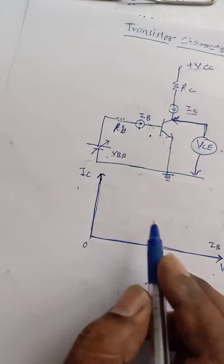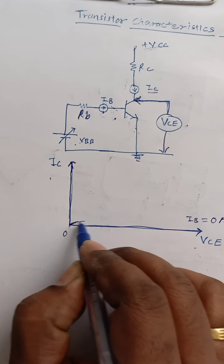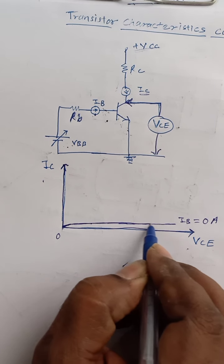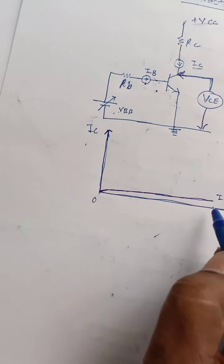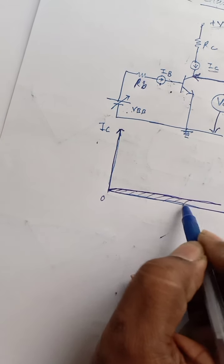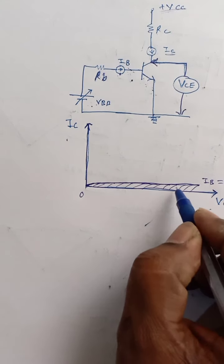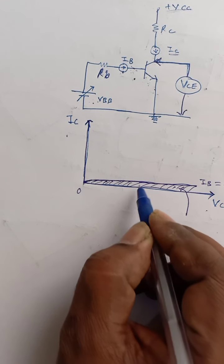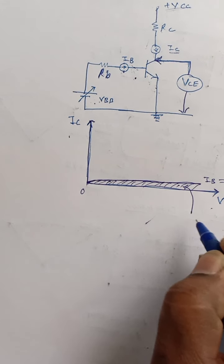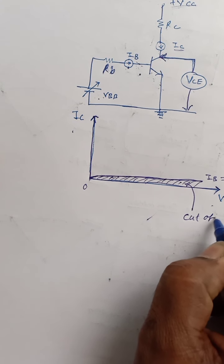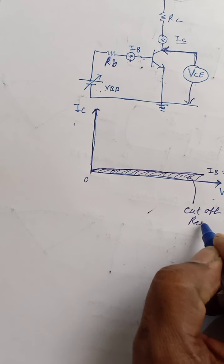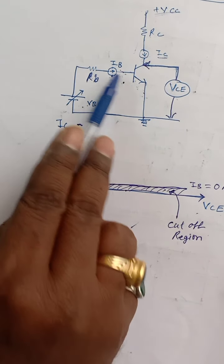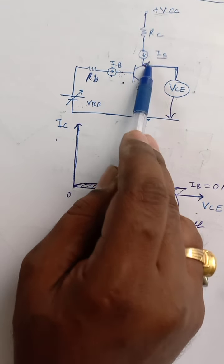As we increase the voltage from 0 to maximum there is a reverse leakage current and it is nearly constant. This collector current is negligible and practically considered as 0. Theoretically we can see there is a reverse leakage current but practically this leakage current is nearly 0. This region where the transistor acts like off — it is in off state — is known as the cut-off region. In this region the base-to-emitter junction is reverse biased and the base-to-collector junction is also reverse biased.